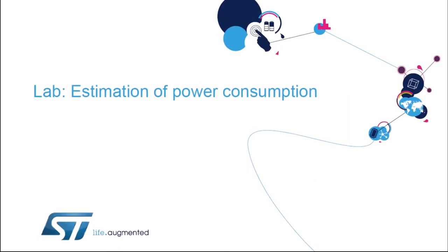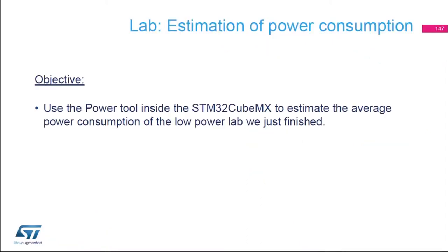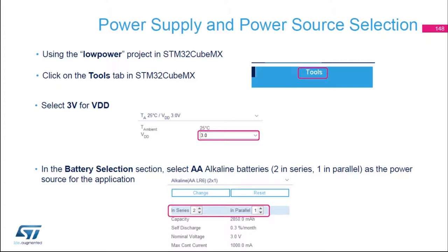This is part two of the low power module. In this part we're going to do an estimation of the power consumption. The objective is to use the power tool inside STM32 CubeMX to estimate the average power consumption of the low power lab we just finished. We're going to use the same low power project from part one.